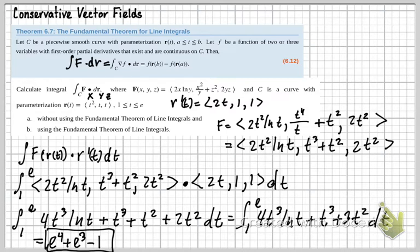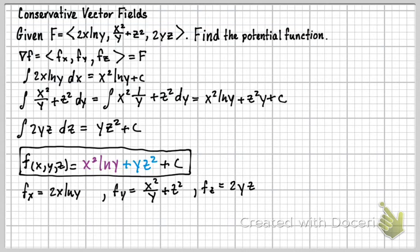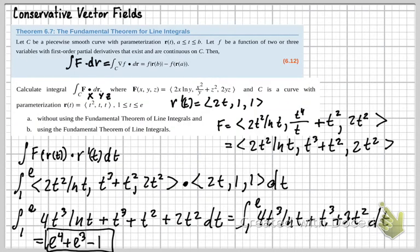Now for Part B, we use the fundamental theorem of line integrals. That means we need the potential function, which I found in a previous video for this same vector field. That function f is x squared ln(y) plus y squared plus yz squared plus C. We're going to take that function and plug in our R(t) components for x, y, and z.